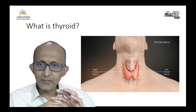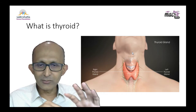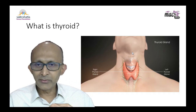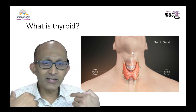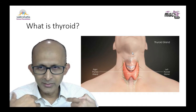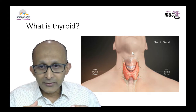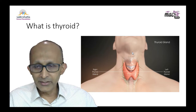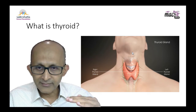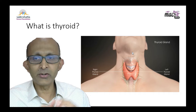The thyroid gland is present in everyone, so it is wrong to say, when you have a thyroid disease, 'I have thyroid.' You actually have a thyroid problem. When a patient comes to me and sits in front of me, very often they tell me, 'Doctor, I have thyroid.' That is a very wrong way to put it. You should be saying that you have a thyroid problem.